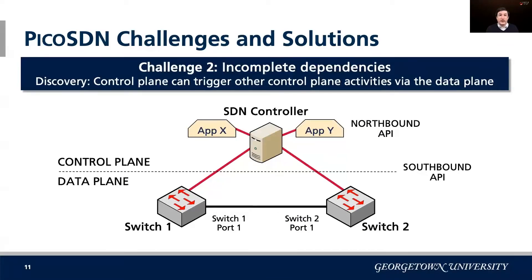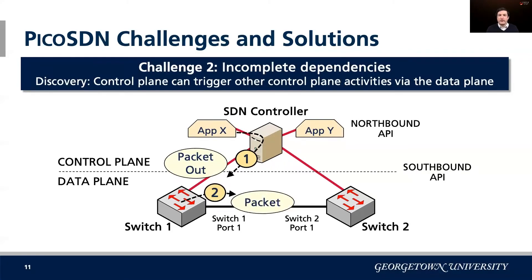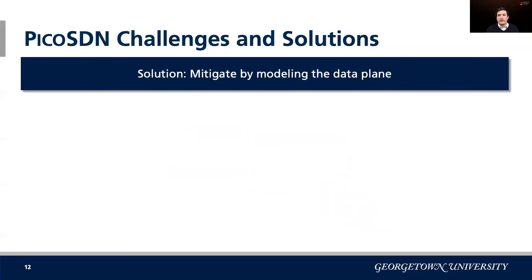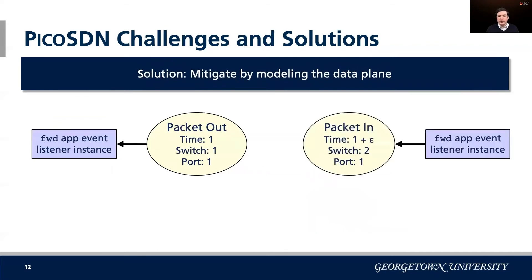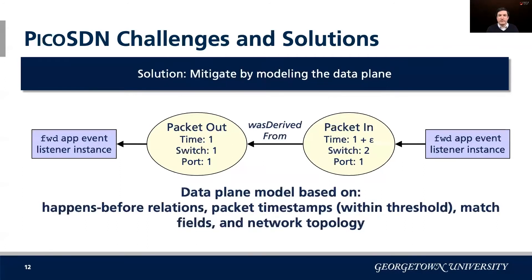We also found an indirect causal link through the data plane — an incomplete dependency, because without it our model doesn't capture dependencies that it ought to. Imagine two apps, X and Y: app X sends a packet out into the data plane with the instruction to flood out to all ports on switch one, and one of those packets goes out the link towards switch two. Switch two sees that packet as incoming with no matching flow rule, sends it up to the controller for processing, where app Y sees it. App X caused something to happen with app Y, but we can't see that from the control plane alone. We mitigate this by combining control and data plane information: a packet going out from an app at time T, and shortly after, an incoming packet being processed by another app. Our data plane model identifies where these causal links should be added to capture indirect control plane causality.